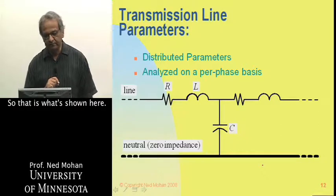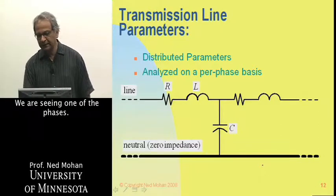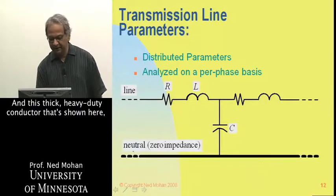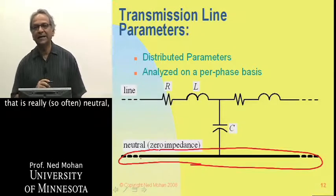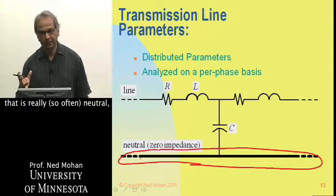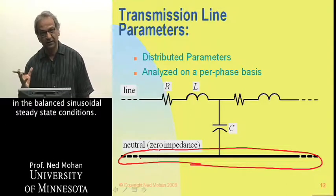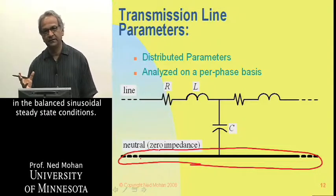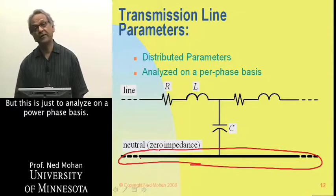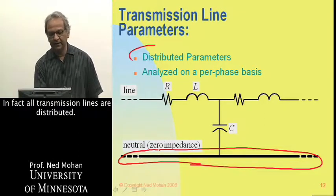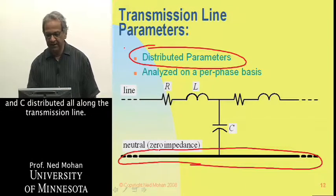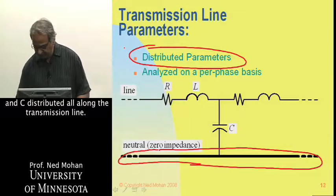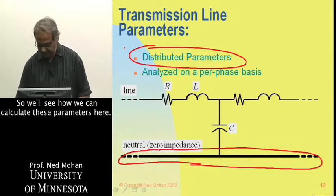In the per-phase representation, one phase is shown with a neutral conductor through which no current flows under balanced sinusoidal steady-state conditions. In effect, all transmission lines have R, L, and C distributed all along the line, and we will see how we can calculate these parameters.